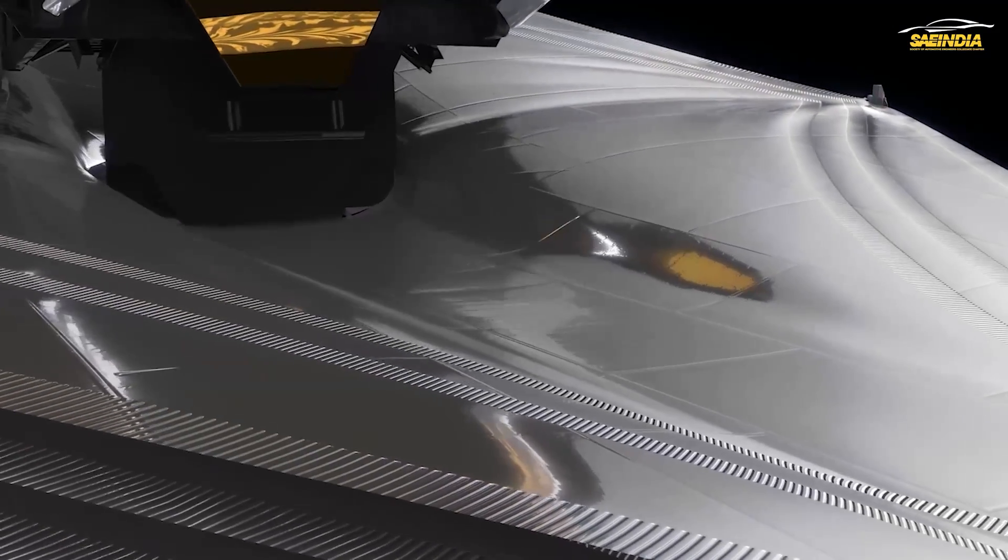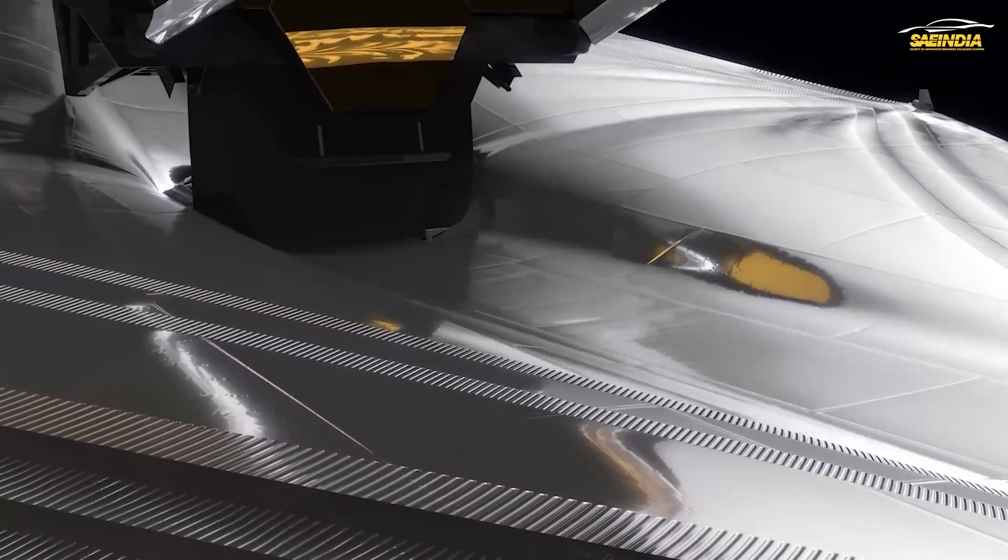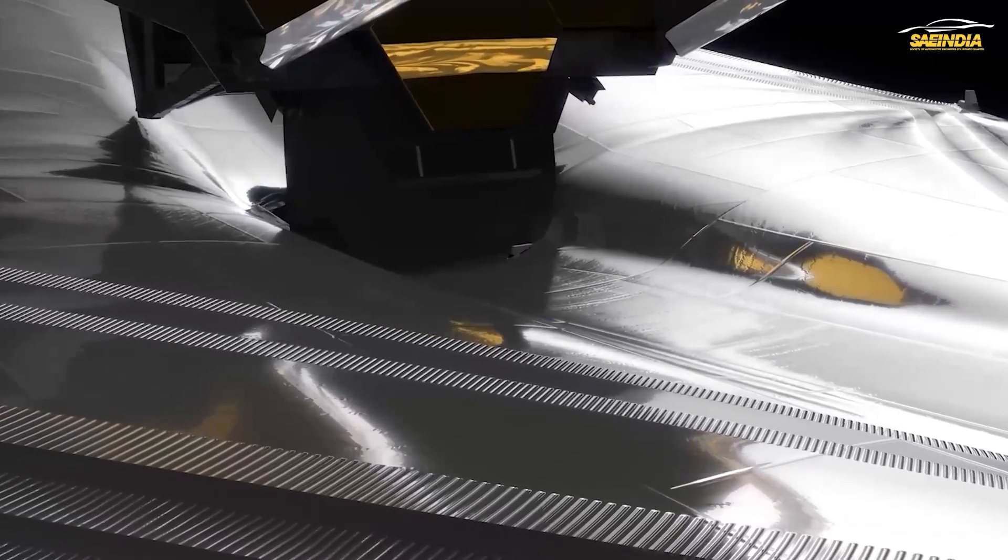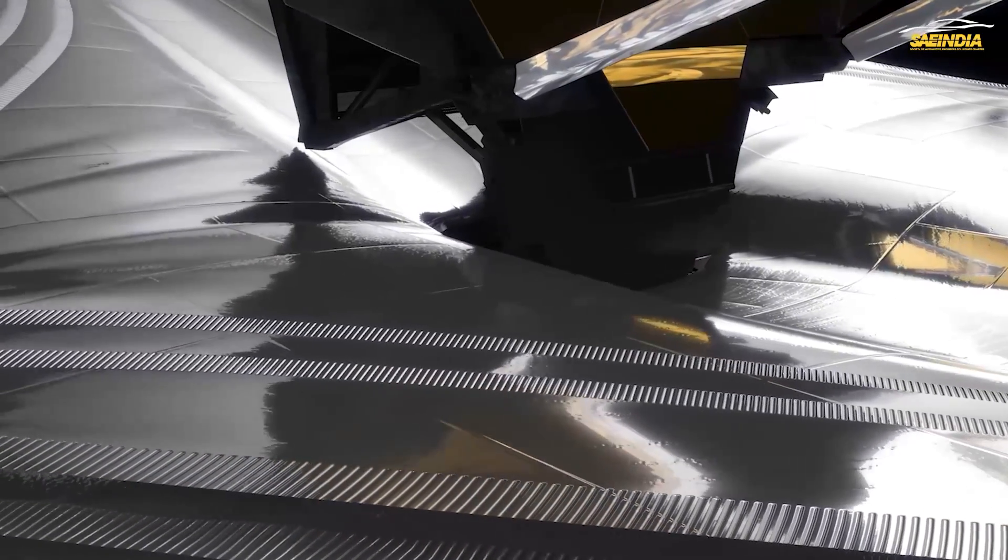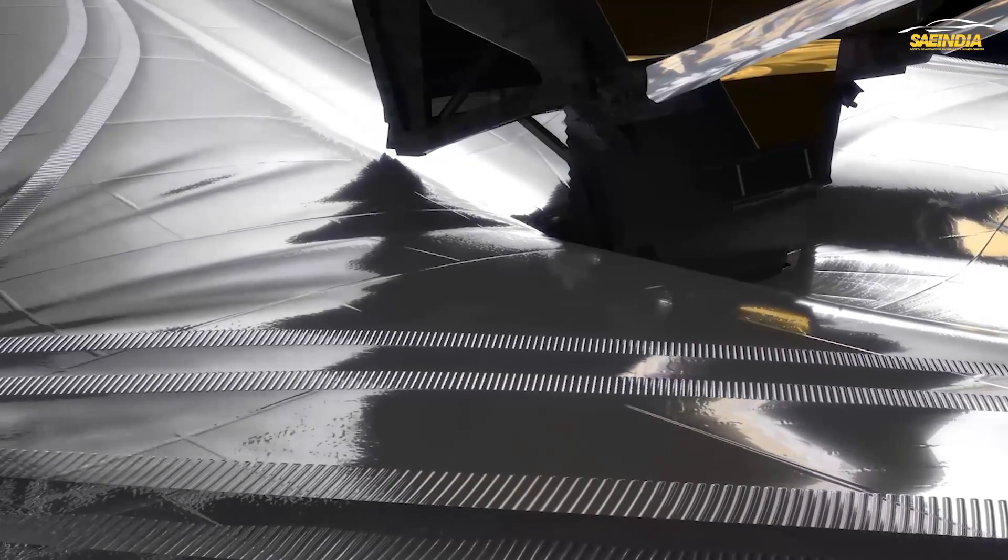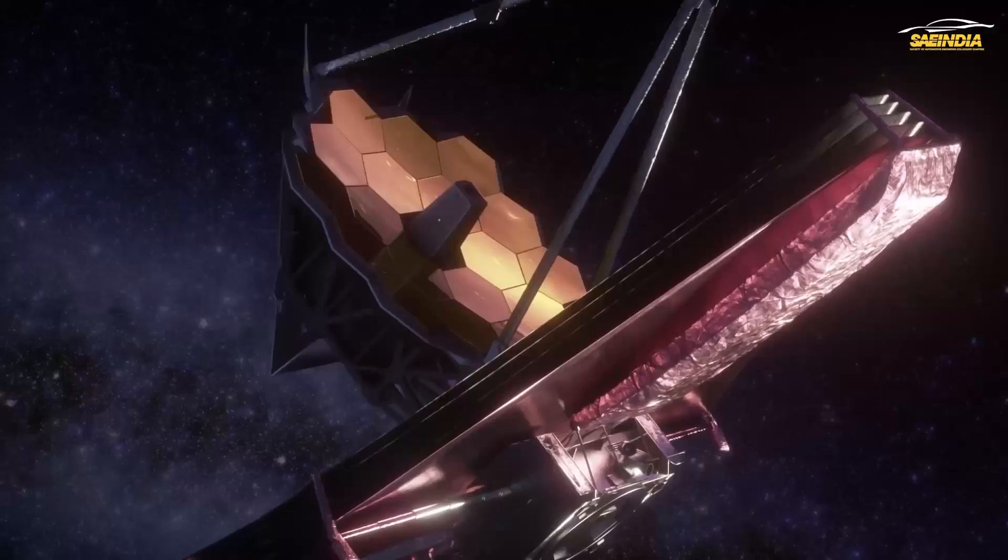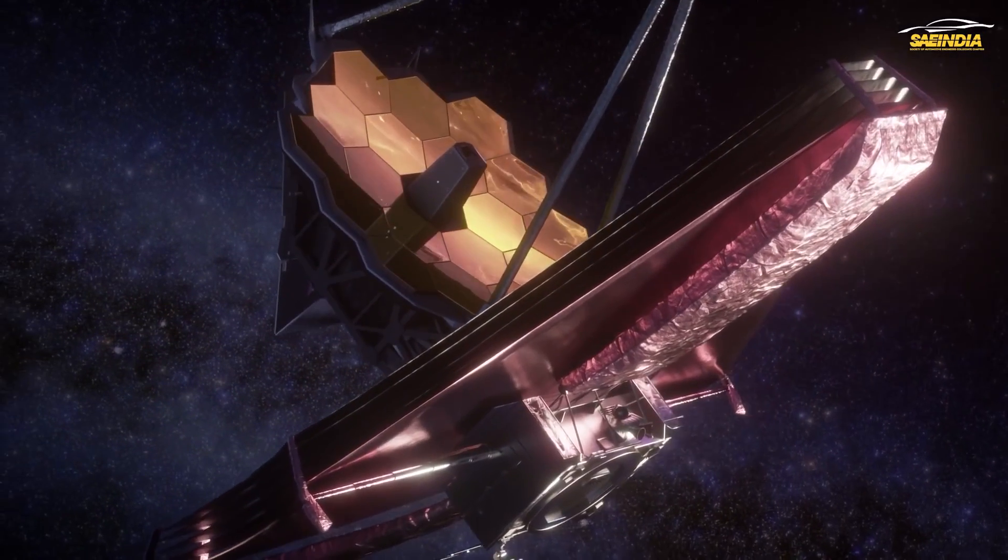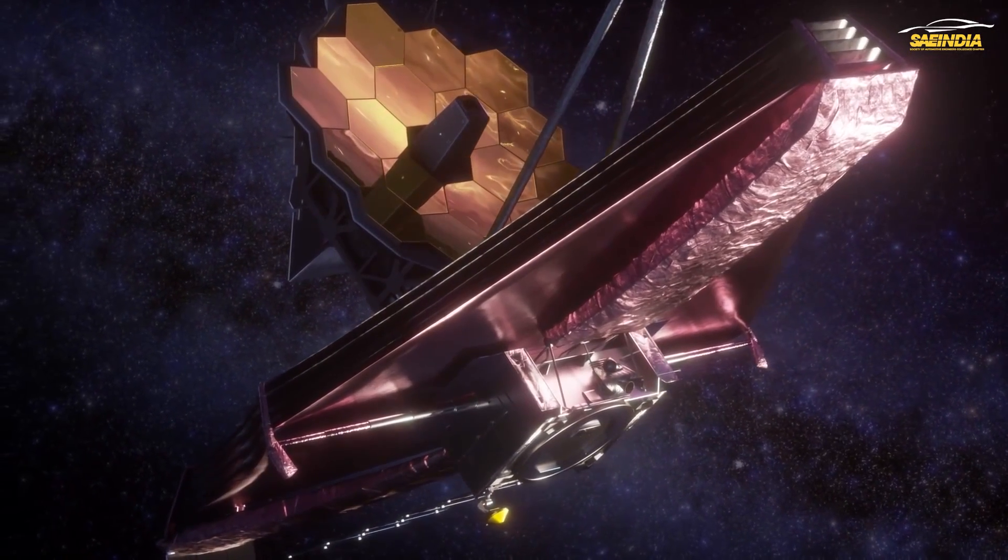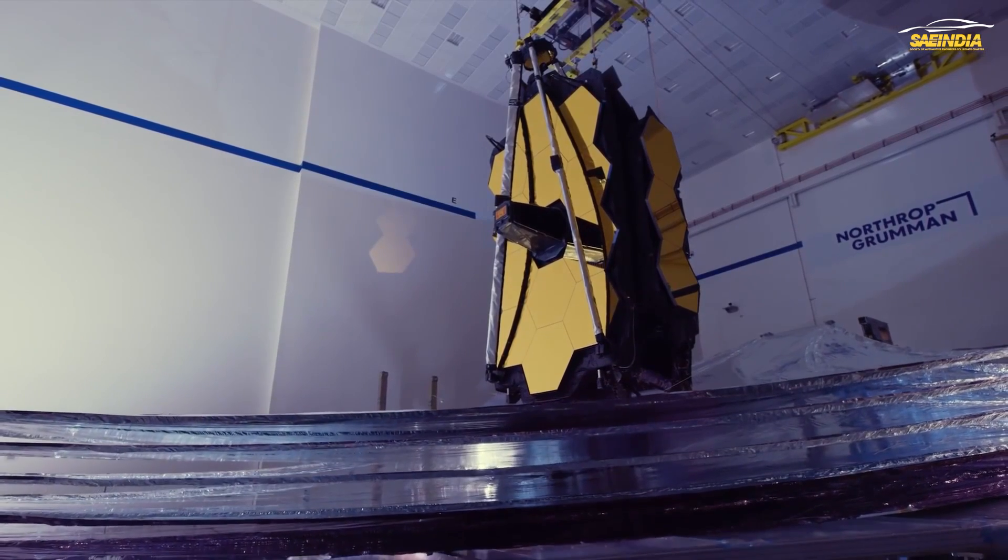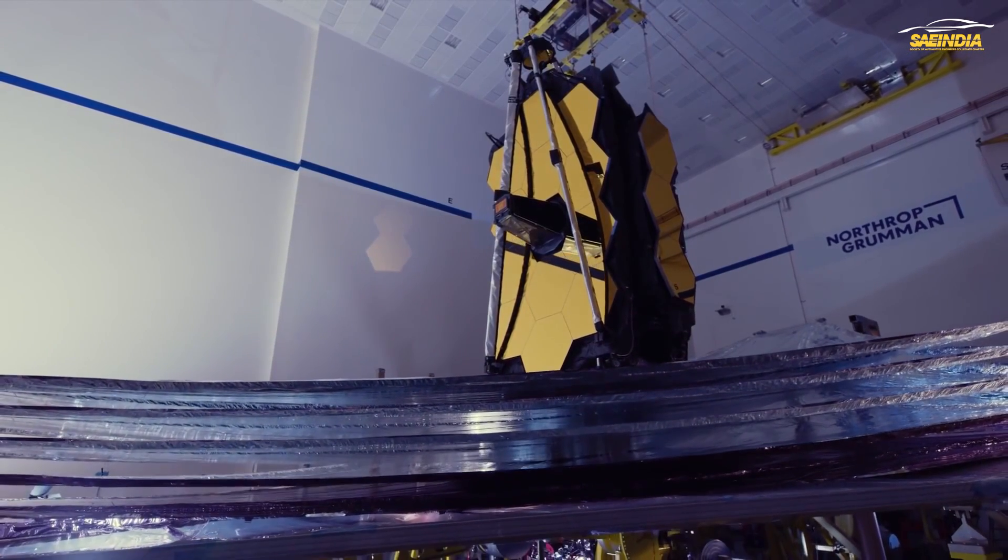For the correct working of the telescope, the dark side should operate at minus 233 degrees celsius which makes the sun shield extremely important to prevent heat transfer from the sun which is mainly through process of conduction and radiation. Sun shields need to be light, strong, resistant to degradation from solar radiation, reflective and dimensionally stable.